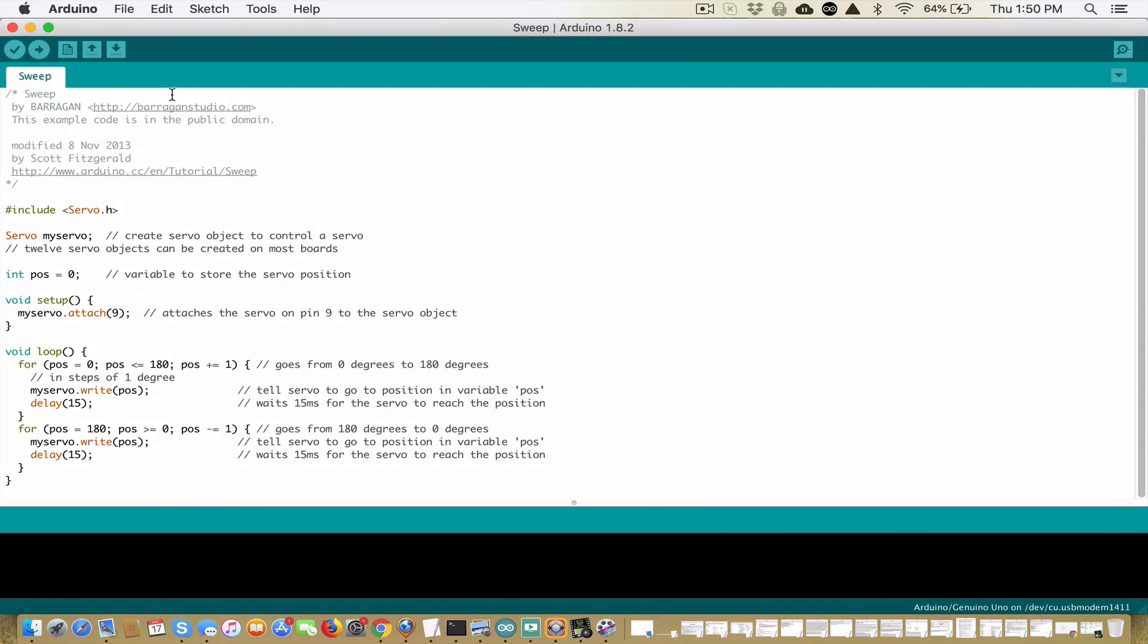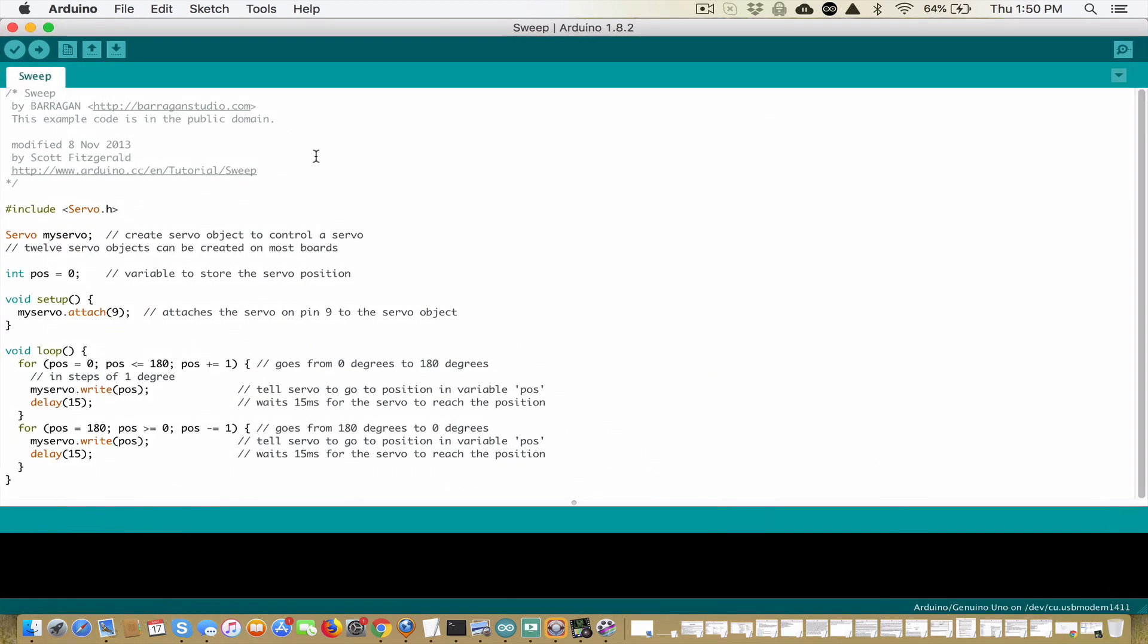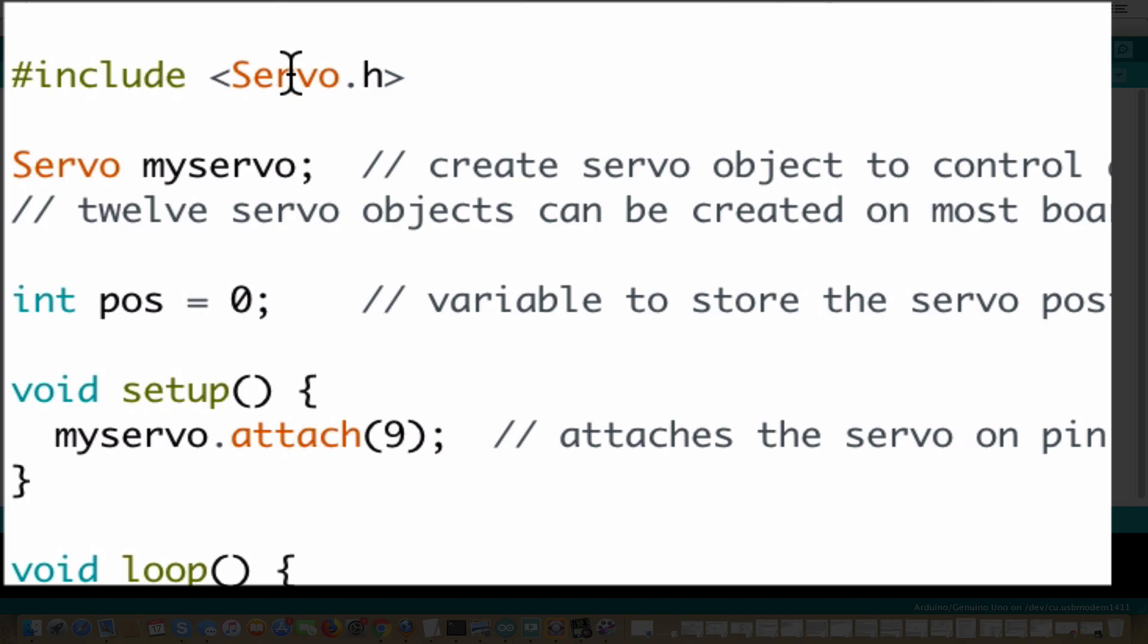See again, at the top, you've got who created this code in the first place. Include servo.h. That's the servo code that we need to make this work. Servo my servo. That's the name your servo. We'll talk about that in a minute.